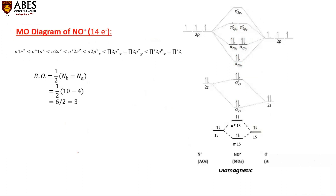The next example is NO⁺, which contains 14 electrons. The electron filling follows the same pattern as the parent molecule discussed in the previous lecture. In the same manner, first the 1s atomic orbitals combine, then the 2s atomic orbitals combine.